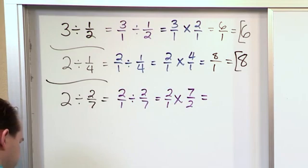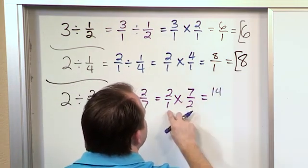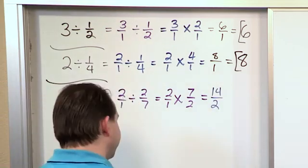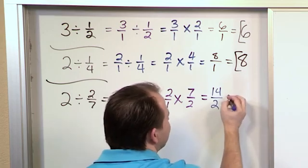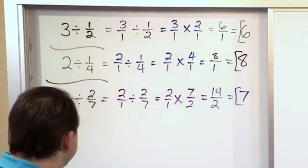So basically we change it so that we flipped everything over. 2 times 7 gives us 14 on the top. 1 times 2 gives us 2 on the bottom. And then we're ready to circle our answer, but we look at this and say, well wait a minute, 14 over 2, this is like division. 14 divided by 2 gives us 7. And that is the final answer.